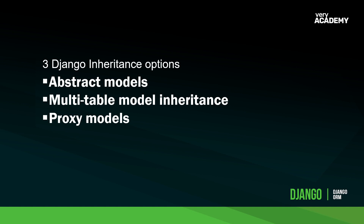Django has three inheritance options: abstract models, multi-table model inheritance, and proxy models. I'm going to give you a simple example for each one, just for you to get the flavor or general overview of where you might want to utilize this and how you might construct it within your models.